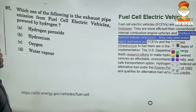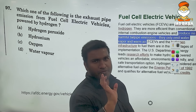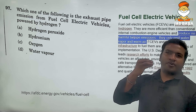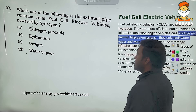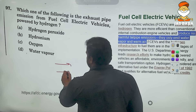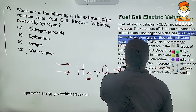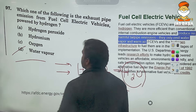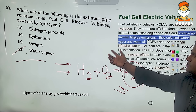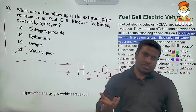Next question: 'In which of the following is the exhaust pipe emission from fuel cell electric vehicles powered by hydrogen?' Hydrogen fuel is a very famous topic in current affairs. We have studied that hydrogen reacts with oxygen and gives water — that is why it is eco-friendly. So the emission is water vapour. A very easy question — hydrogen reacts with oxygen to give water, and water vapour is released as emission.